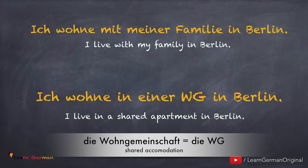WG, or Wohngemeinschaft, is a shared apartment which is shared by two, three, or more people. In such an apartment you share the rent and the rooms, etc. This is a very common form of living in Germany.